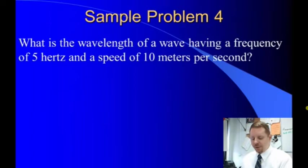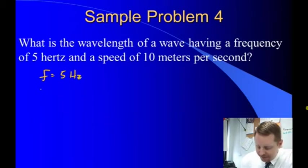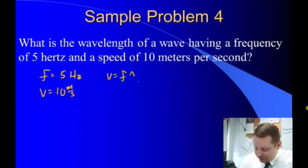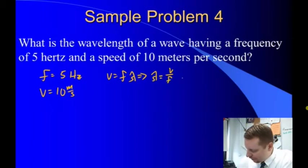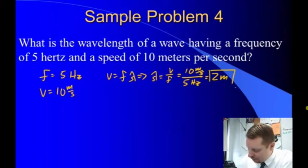What is the wavelength of a wave having a frequency of five hertz and a speed of ten meters per second? If velocity is equal to frequency times wavelength, then wavelength equals velocity over frequency, or ten meters per second divided by five hertz, or five one-over-seconds, which gives us a wavelength of two meters.